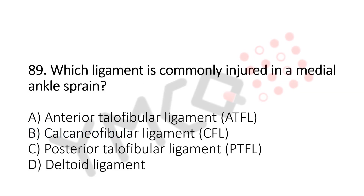Which ligament is commonly injured in a medial ankle sprain? Option A: anterior talofibular ligament. Option B: calcaneofibular ligament. Option C: posterior talofibular ligament. Option D: deltoid ligament. And the answer is option D, deltoid ligament. Now let us move to question number 90.